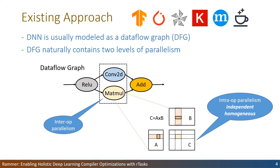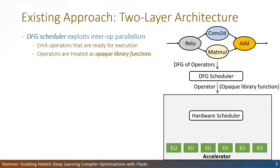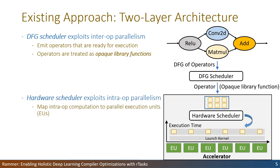Take matrix multiplication as an example — it can be partitioned into independent and homogeneous sub-matrices for parallel computation on accelerators like GPU. To exploit the two levels of parallelism, current practices adopt a two-layer scheduling approach. The DFG scheduler exploits inter-operator parallelism and emits operators based on dependencies. Furthermore, to support different hardware, operators are treated as opaque library functions, so another layer of scheduler is implemented in hardware.